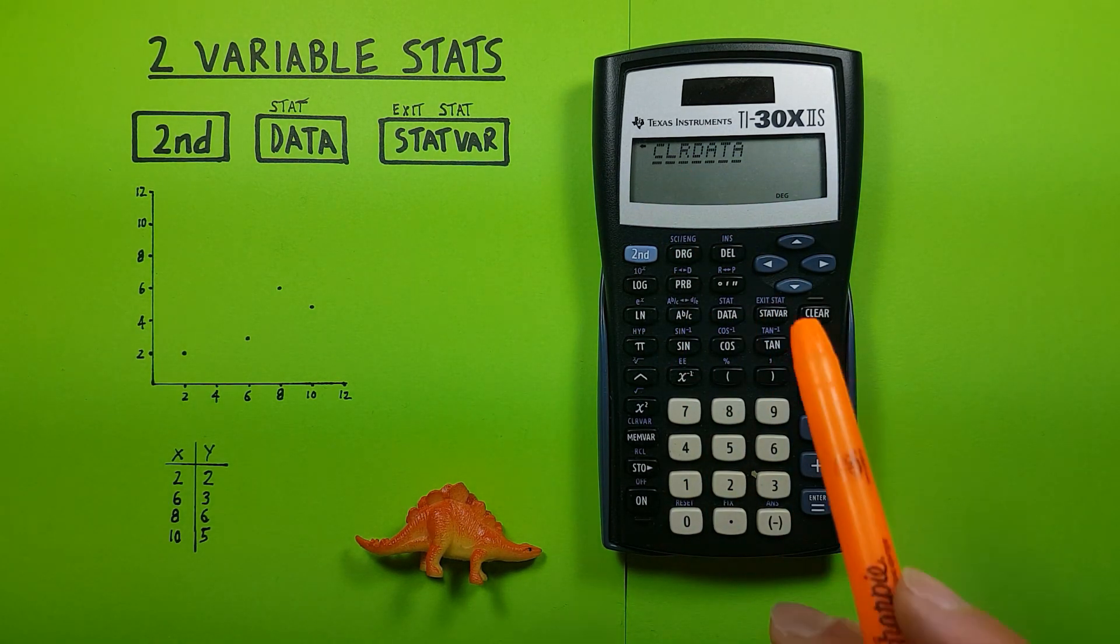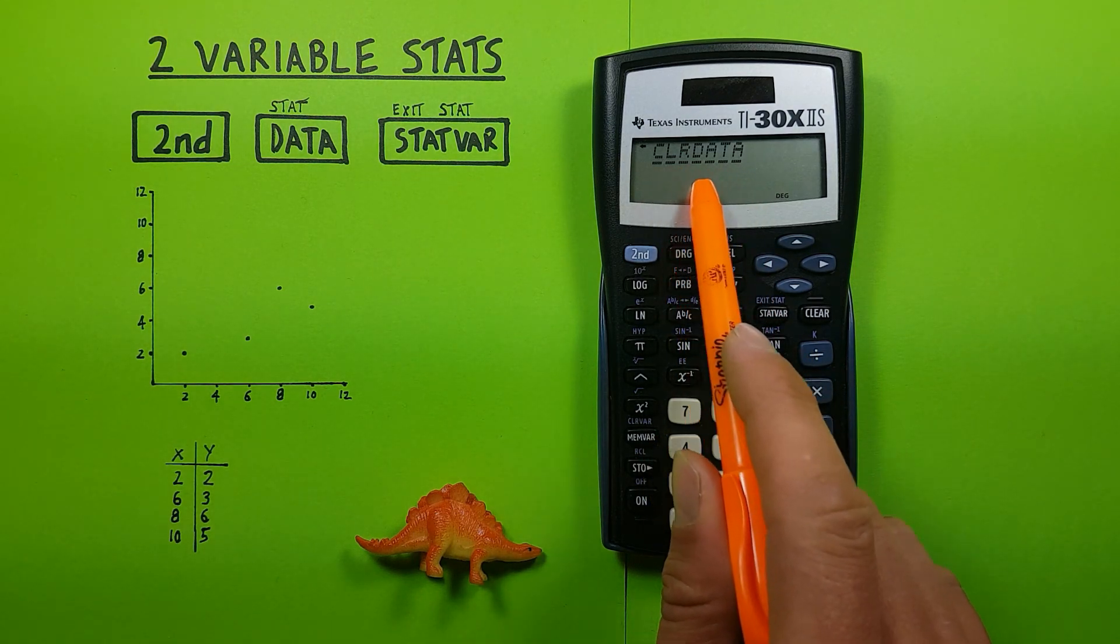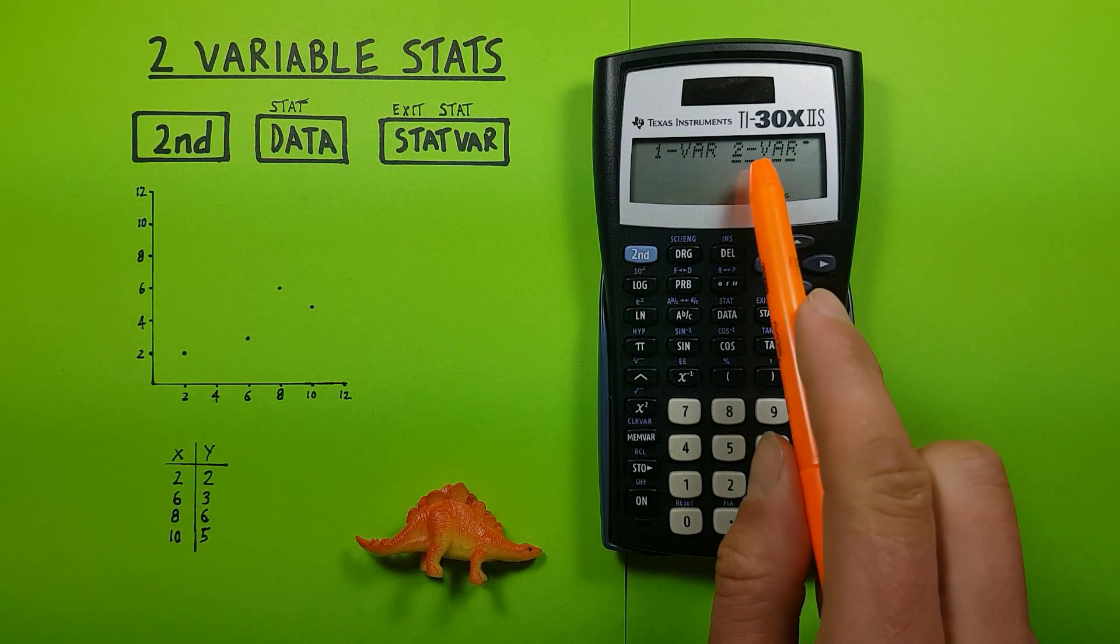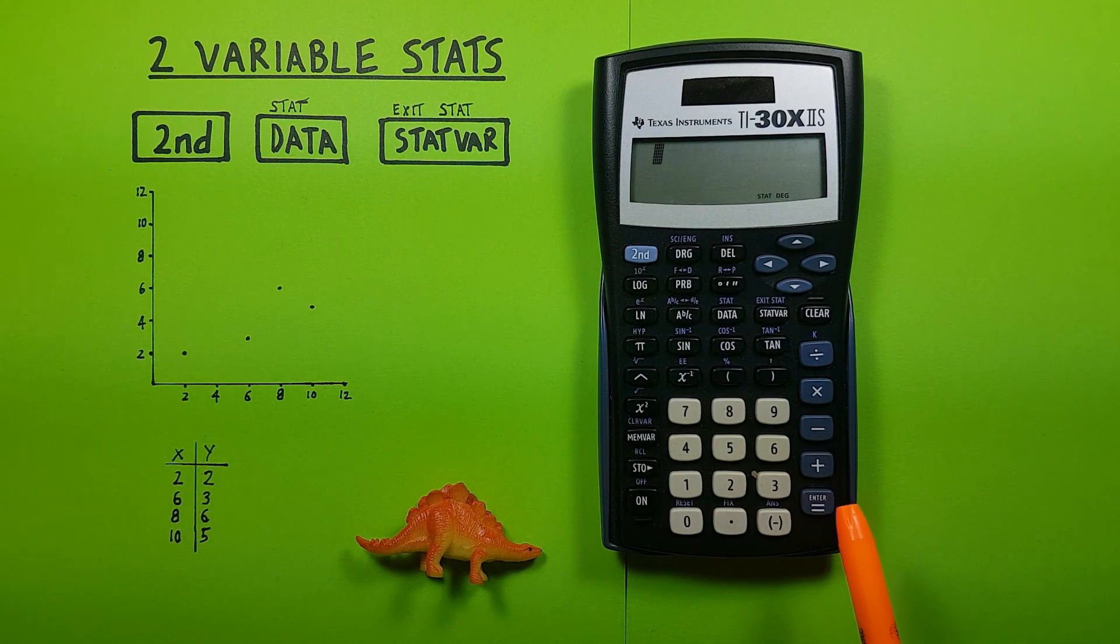It's always a good idea to use this when getting started for the first time to clear any excess data out of your calculator. So we'll hit enter on that first and it'll bring us back here, and then we'll go once to the right and select two var or two variable stats. You can see now we have STAT down at the bottom of the screen beside our DEG there. This lets us know we're in statistics mode.